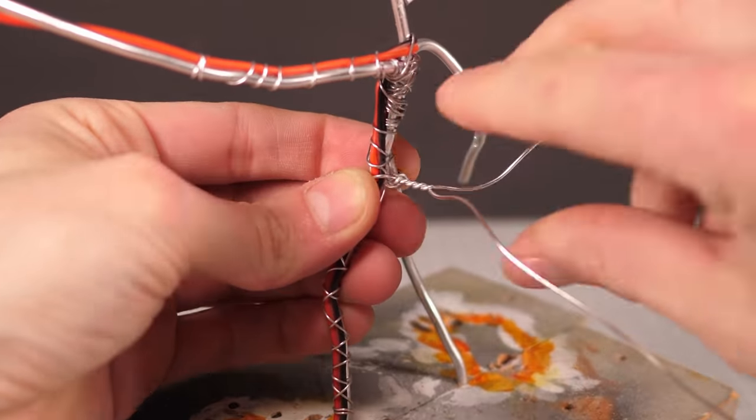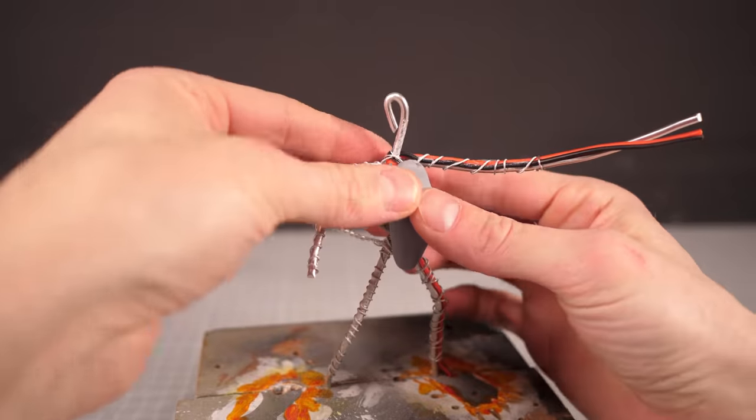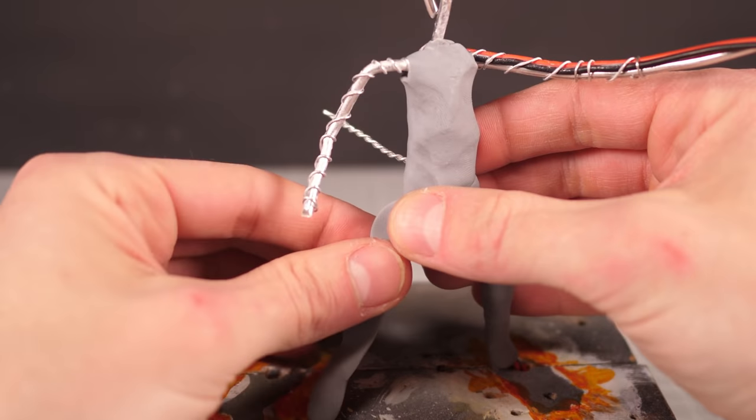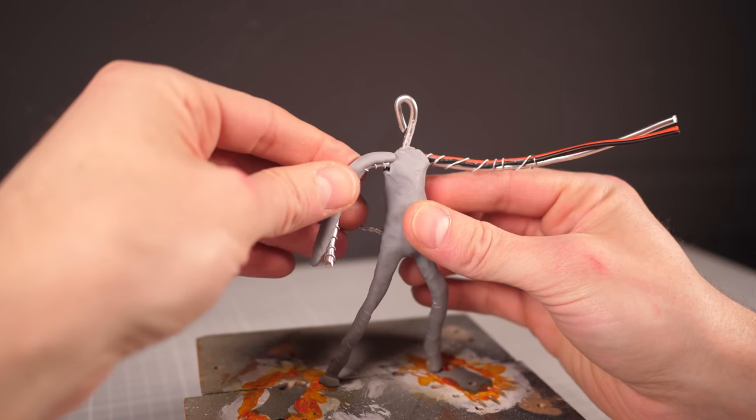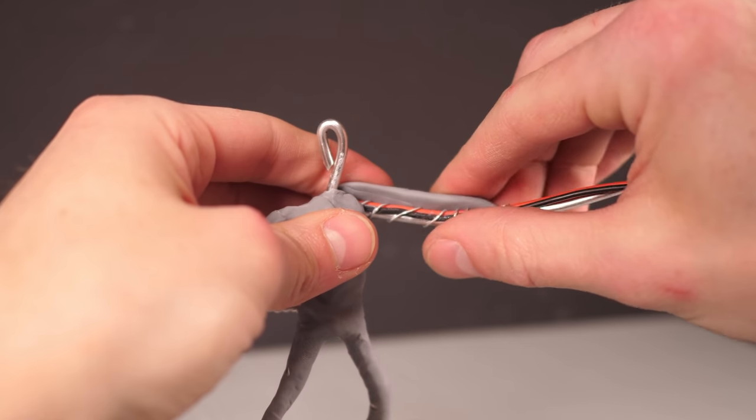It did take me a few tries to get the proportions correct with Knuckles, and even then he could probably do with a bit more bulk in his upper body. But I'm happy enough with how it turned out given the nightmare that was trying to find non-rule 34 references for Sonic and Knuckles.